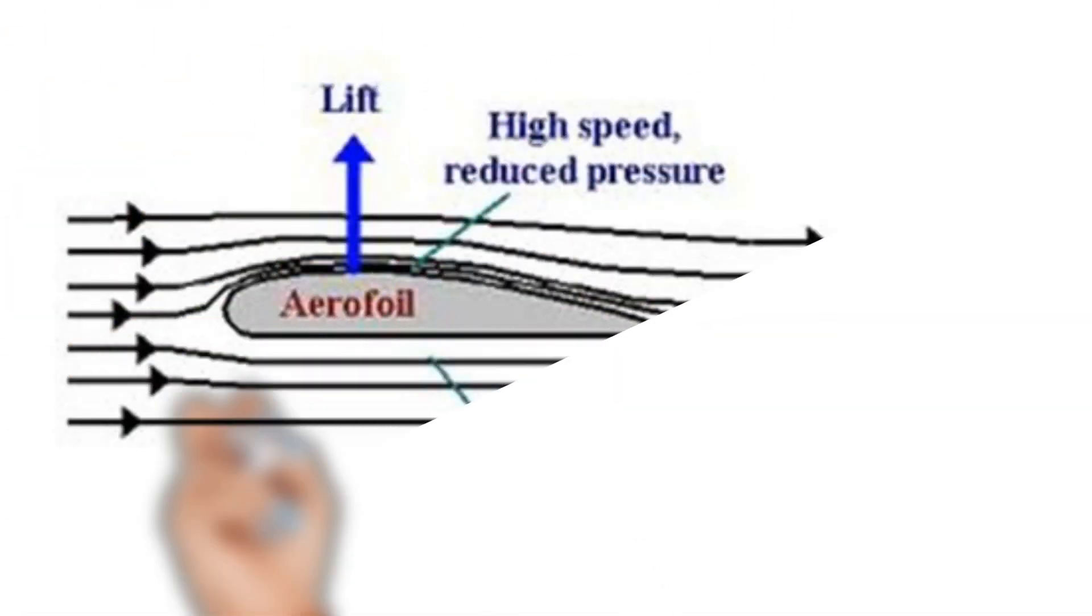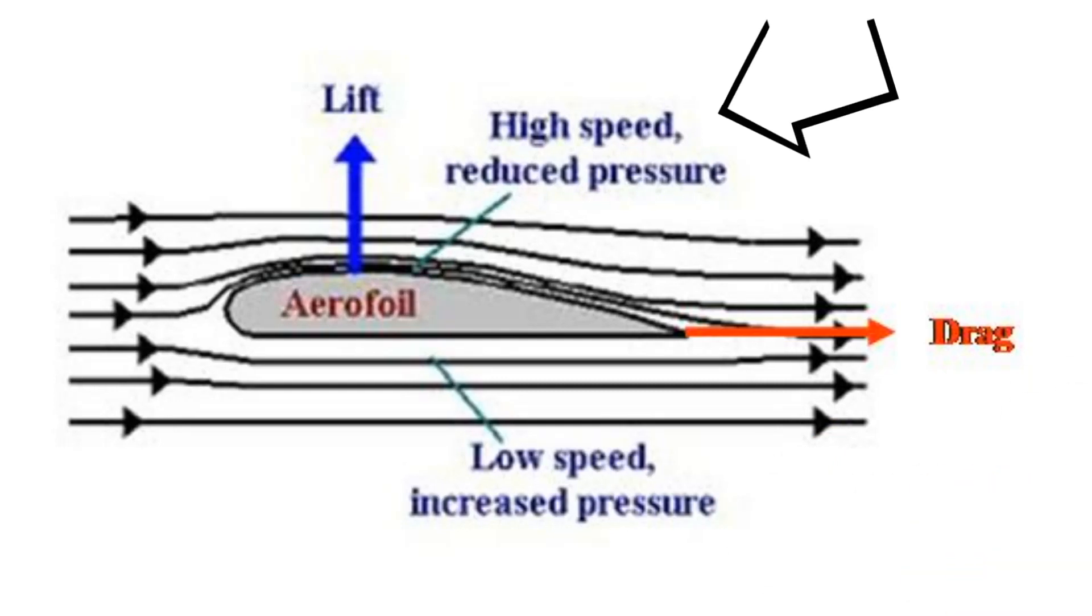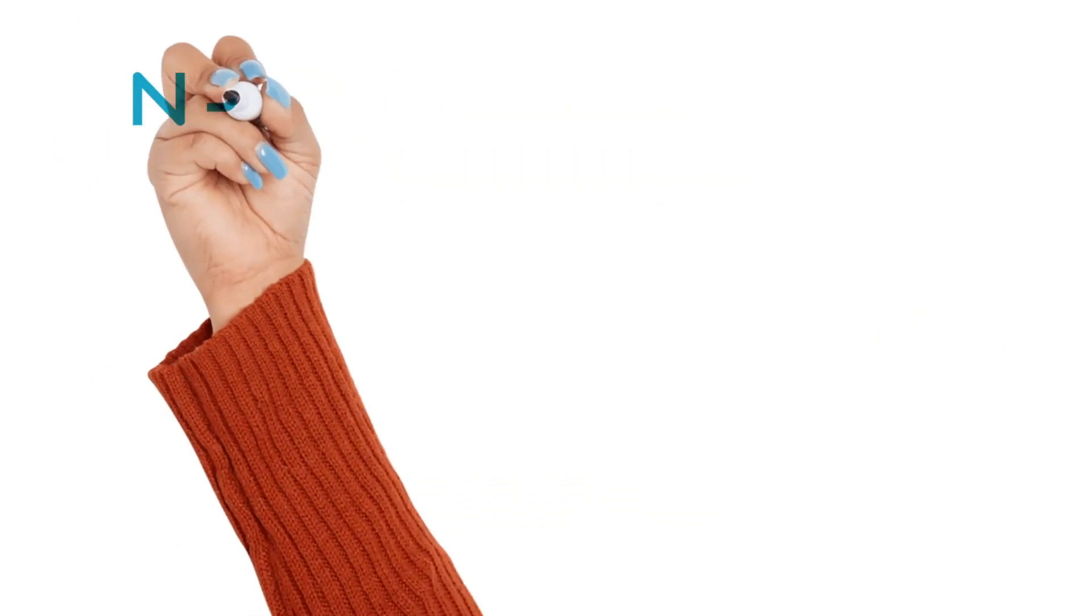According to Bernoulli's principle, this means that the air pressure on top of the wing is lower than the air pressure underneath it. This difference in pressure creates a lifting force that allows the airplane to stay in the air.